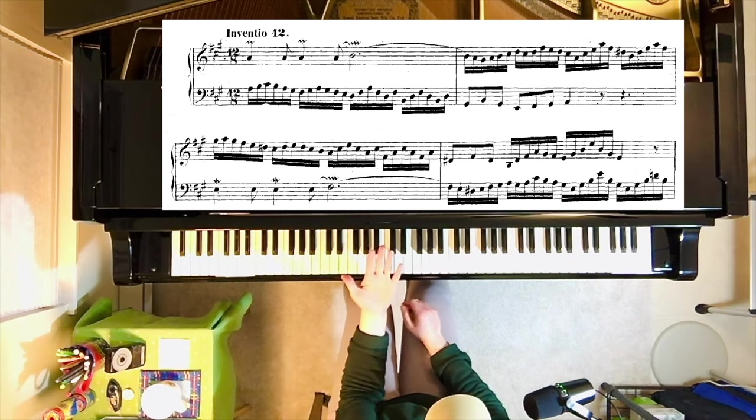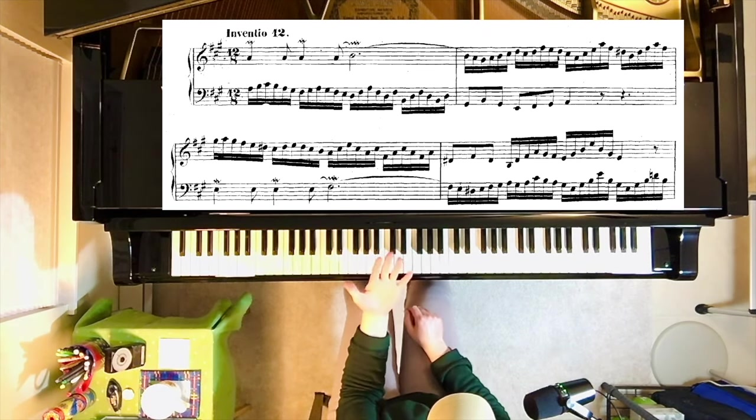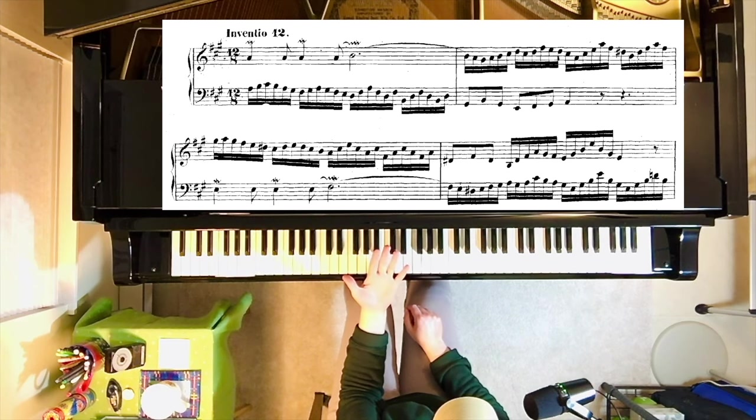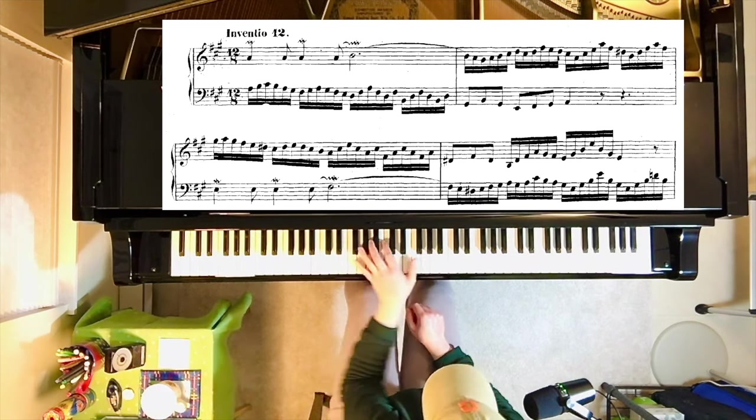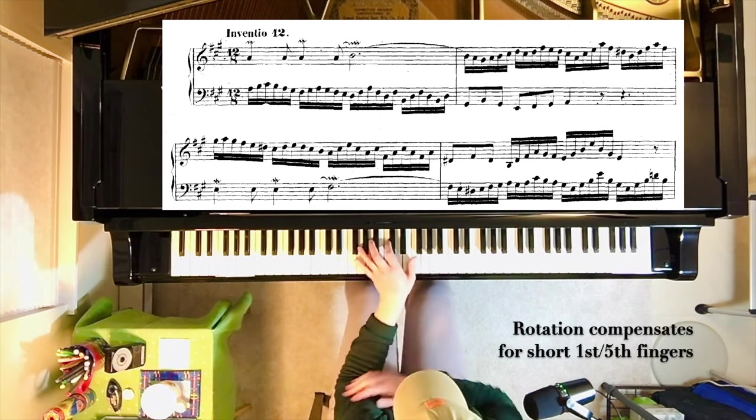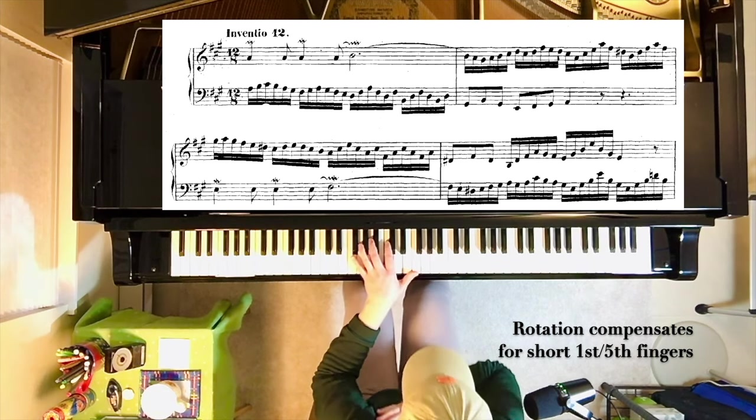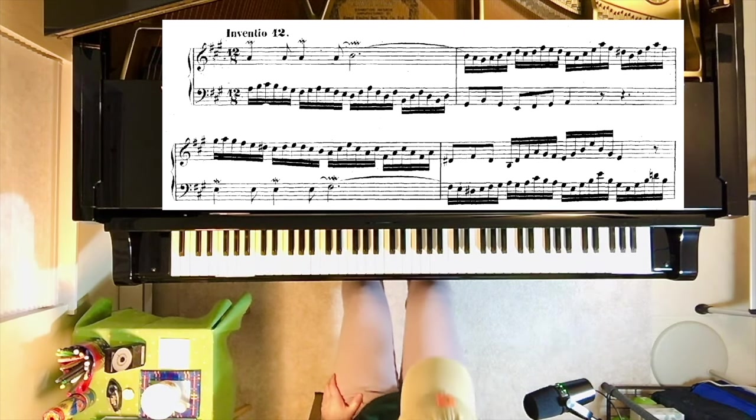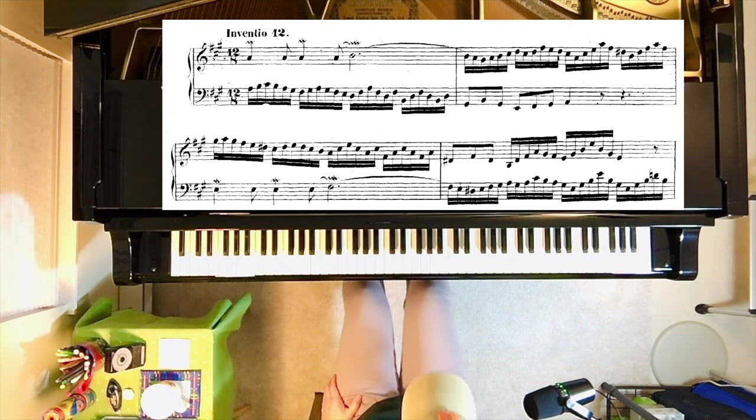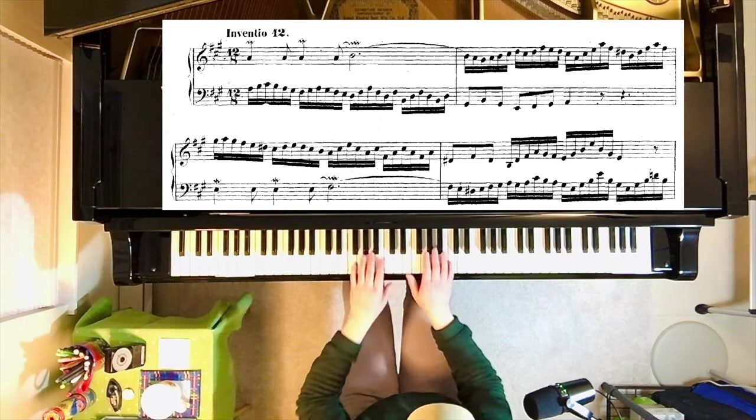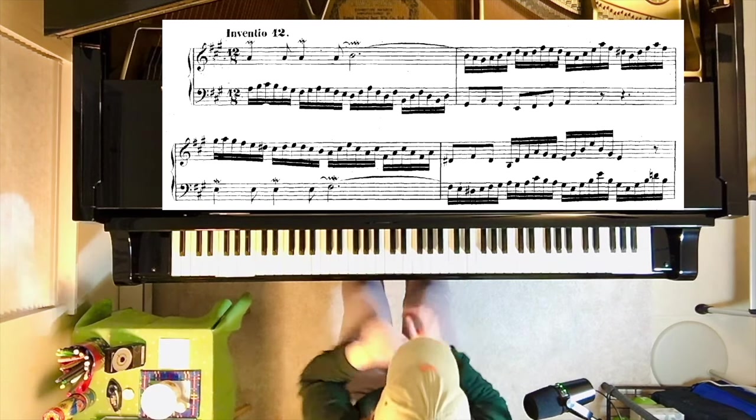You have to remember that your fifth finger and your thumb are a lot shorter than the rest of the fingers. And so we compensate for that at the piano by rotating. So it's the arm and also my torso, my upper body, I'm leaning forward and back for pretty much each of those beats. Let me do it slowly.